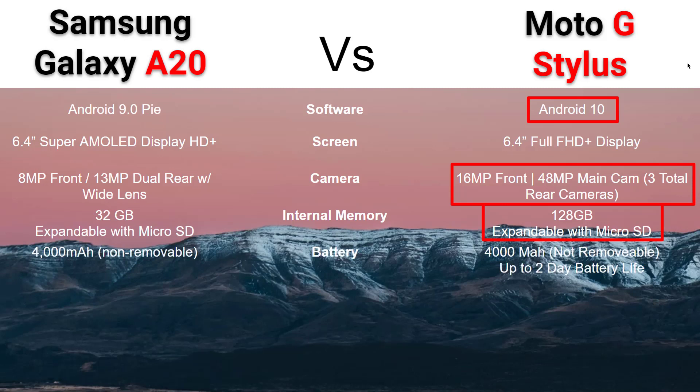Battery-wise, they're both advertising a 4,000 milliamp battery, and neither is removable. On Moto's site, they do advertise that you can get up to two days on the battery. We haven't tested that enough to confirm, but we're just sharing what's on the site. Samsung also has a 4,000 milliamp battery, but the site doesn't claim two-day battery life, so just thought that was important to note.